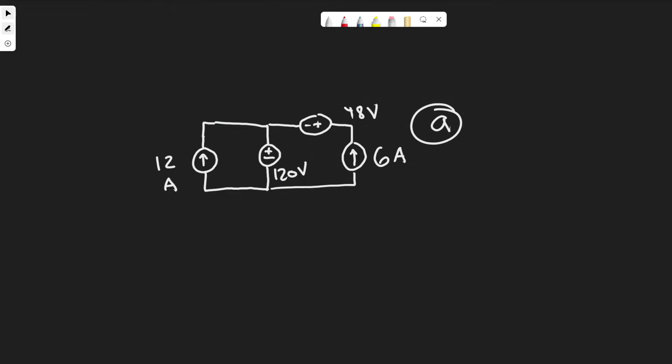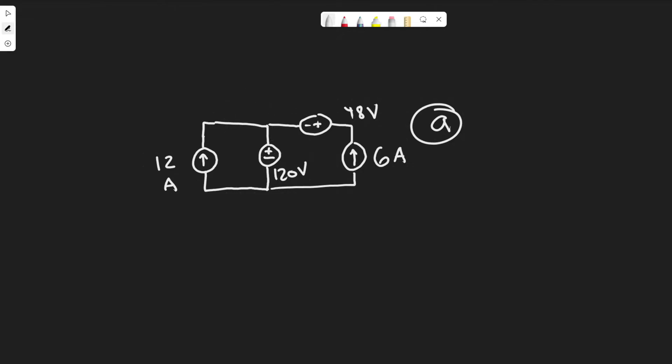For example, if you have too much current going in — current going in this way, current going in this way, current going in here — and you have less going out, it's going to be invalid. But we're just going to focus on part B. A is valid, so let's just start with B.